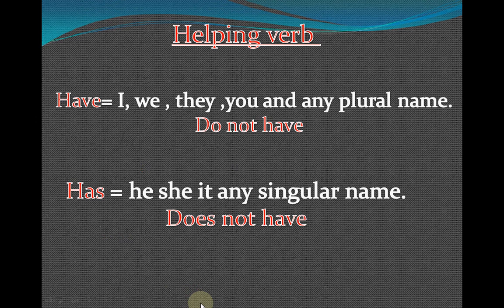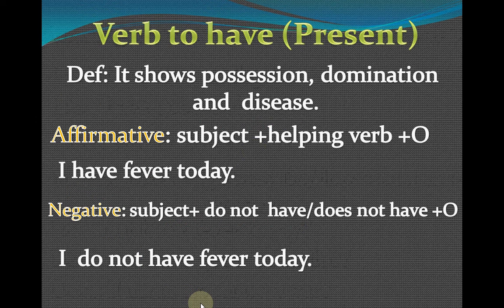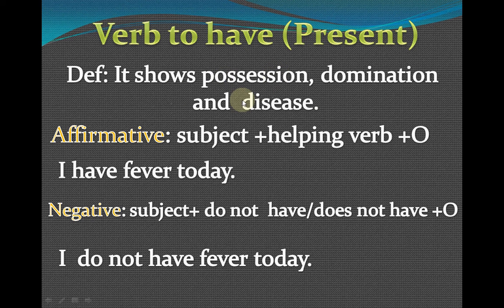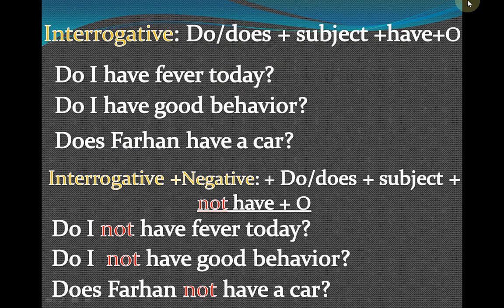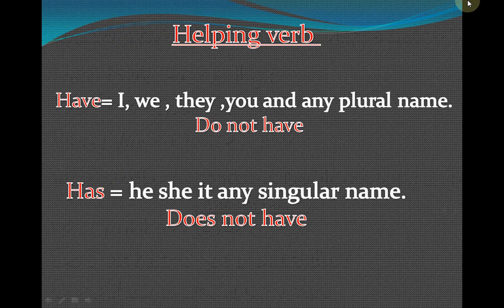Let us discuss some examples — how to make sentences using the definitions of position, disease, and domination, and how to make 'have' sentences. When we make a sentence, we must know the definition and the formula including the helping word.